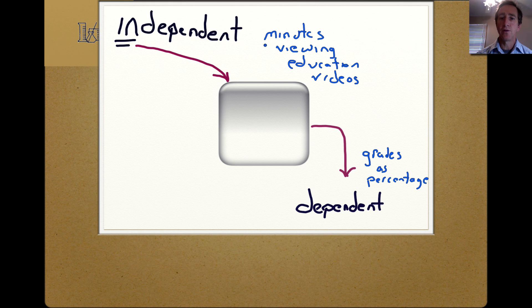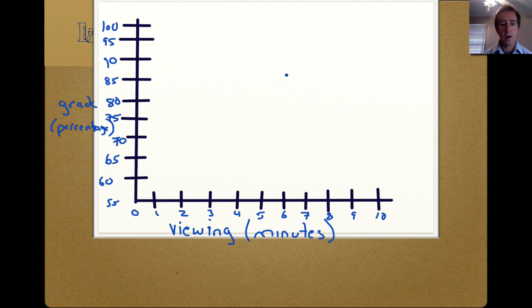For an example we'll have minutes viewing education videos. That's our independent variable, that's what goes in, and the output is your grades as a percentage. I have included viewing and the units minutes, and grade and the units are percentage.